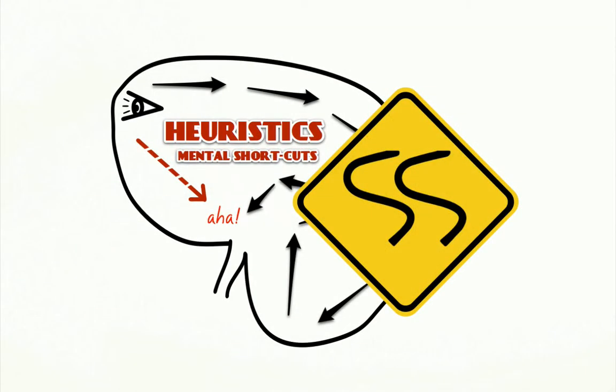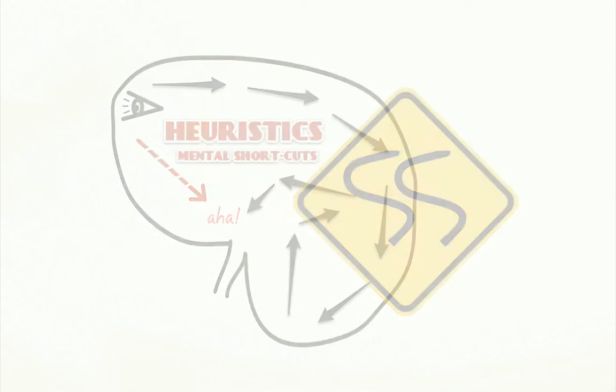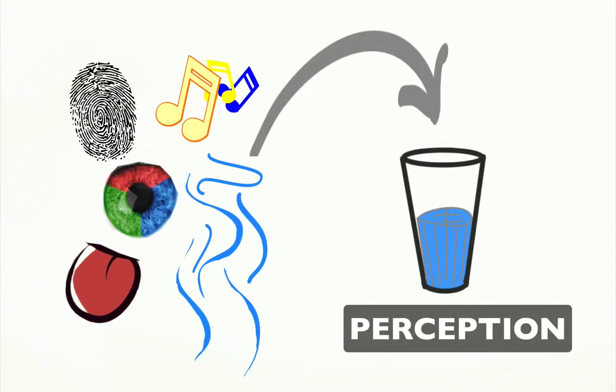Besides problems with mental thumb rules, your thinking can be adversely impacted by your senses too. This is because senses construct your perception, and your perception guides how you interpret the world and act in it.